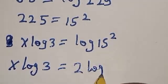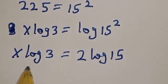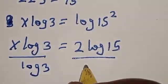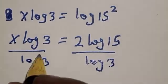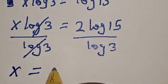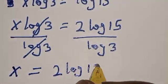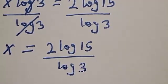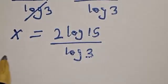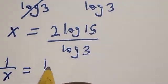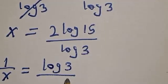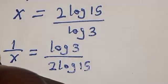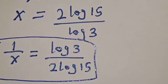So x log 3 is equal to log 15 squared, which gives x log 3 is equal to 2 log 15. Now we're looking for the value of x. Let's divide both sides by log 3. This gives x is equal to 2 log 15 divided by log 3. But what we have to find is 1 over x, so 1 over x is equal to log 3 divided by 2 log 15. That is the value of 1 over x.